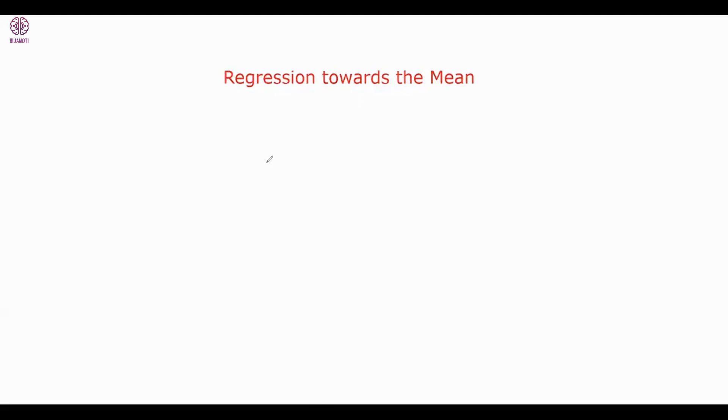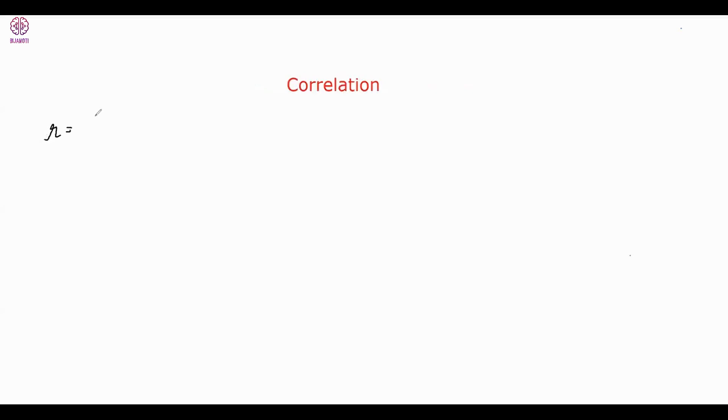Hello guys, so now what we'll do is understand more about correlation. What is correlation, when did it come out? The correlation coefficient r is defined as r squared equals SXY divided by SSX times SSY.